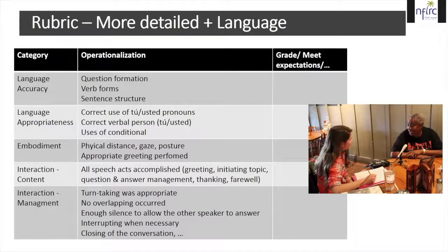A more detailed language rubric could include, as Yao has pointed out, whether students are able to do question formation correctly, whether they can use their forms correctly, and their sentence structure. This gives students and teachers specific criteria to work on to improve language use.